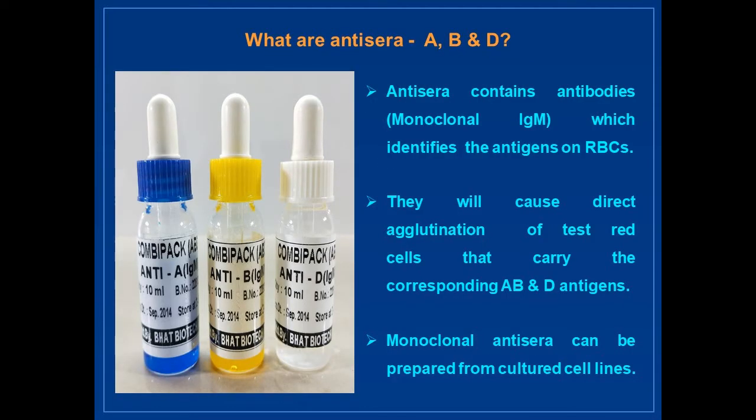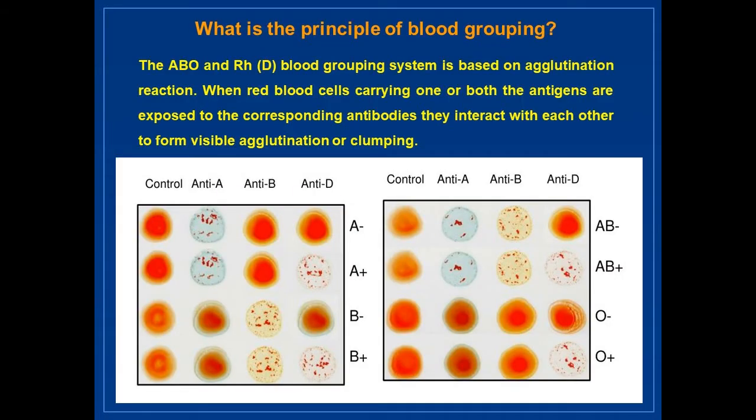Now let us see what antisera A, B, and D are. Antisera contain antibodies which identify the antigens on RBCs. They will cause direct agglutination of test red cells that carry the corresponding A, B, and D antigens. Monoclonal antisera can be prepared from cultured cell lines.